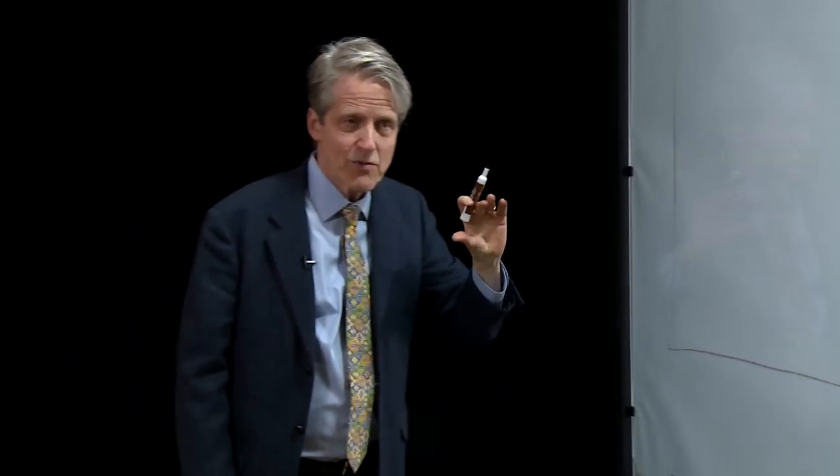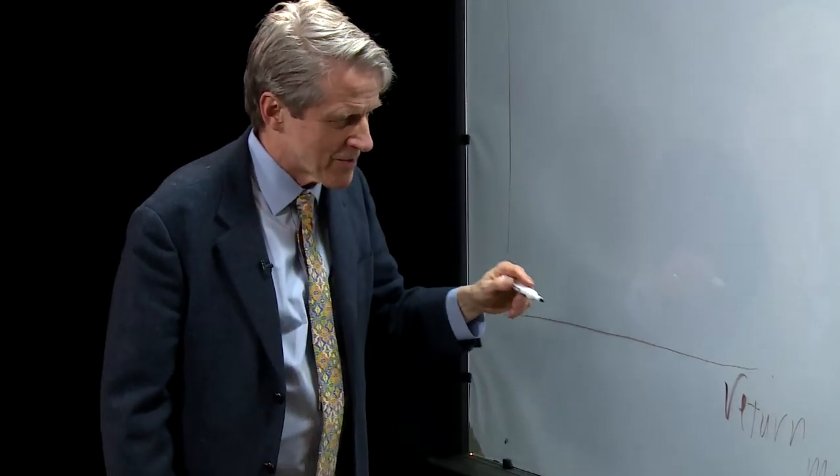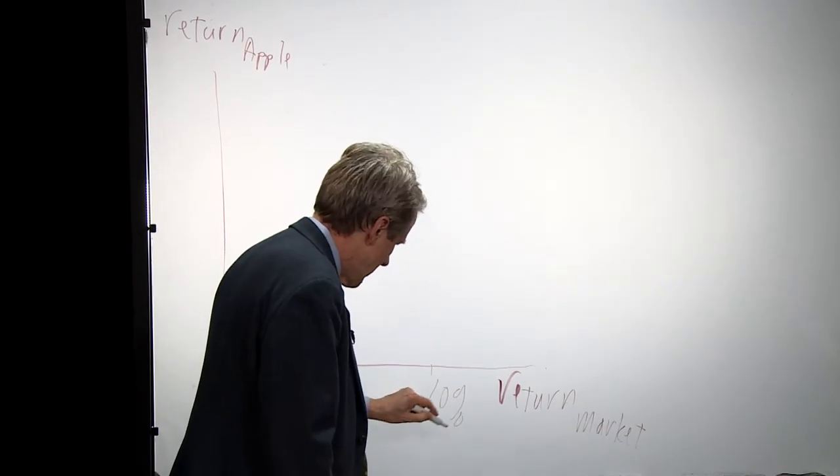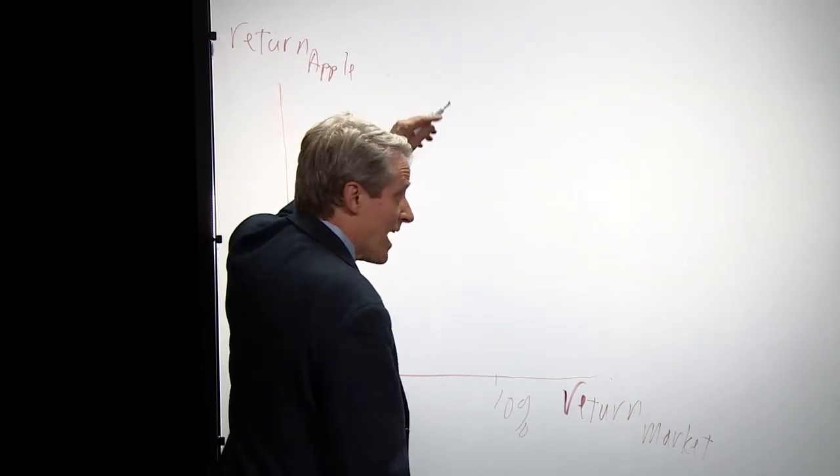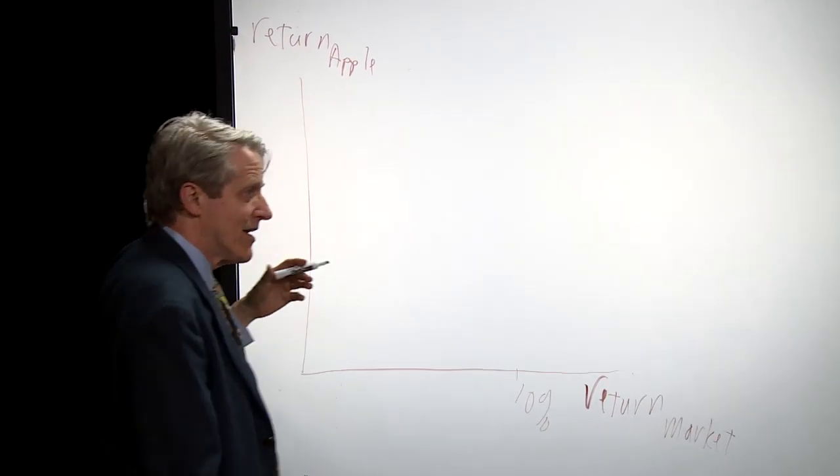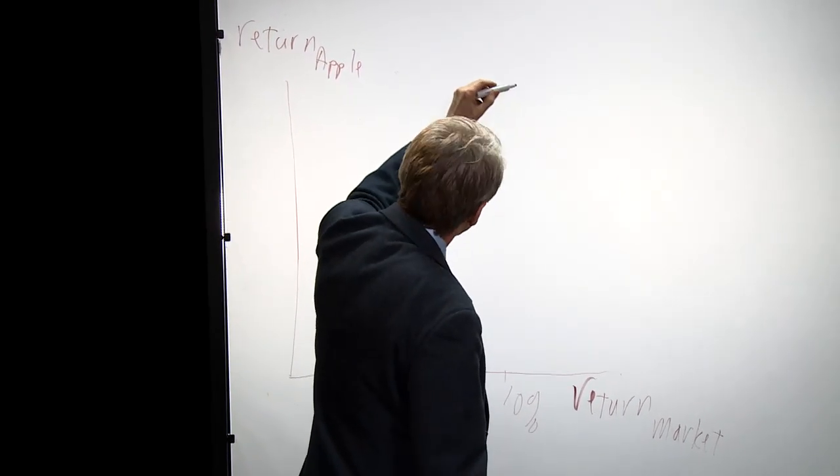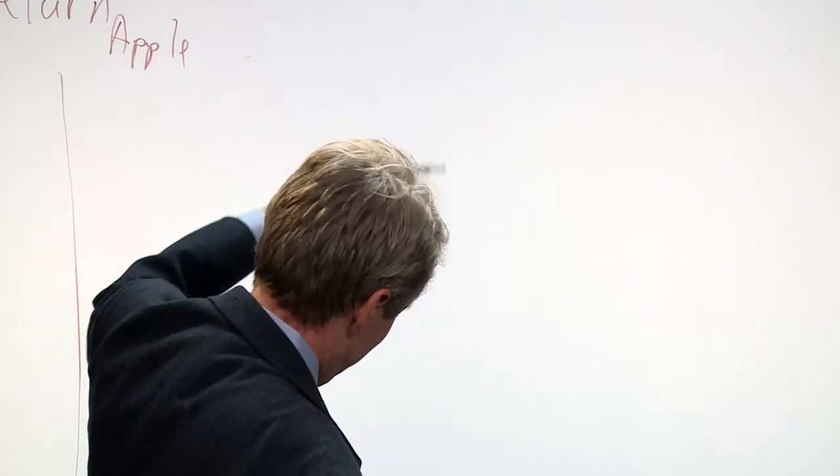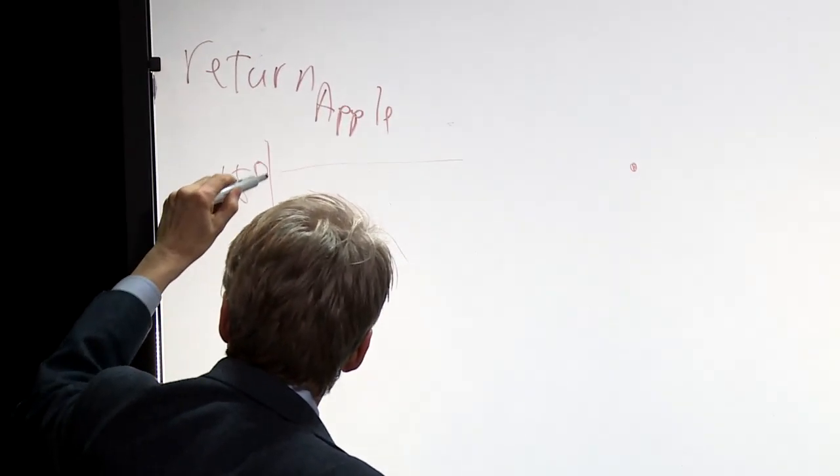And each point represents one year. So let's pick a year when the stock market went up. Let's say the market went up 10%. And what did Apple do in the same year? Well, let's say it did 15%. So I make a point here above 10% and at 15% here.